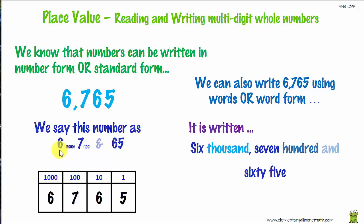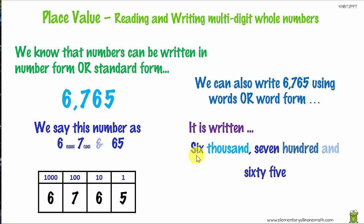This number here we learn to say as six thousand, seven hundred and sixty-five. We know that there are six thousands, seven hundreds, six tens, and five ones. We can also write six thousand seven hundred and sixty-five using words, or what's known as word form. It is written as six thousand, seven hundred and sixty-five — don't forget the comma, it's very important.